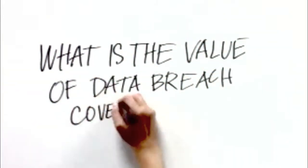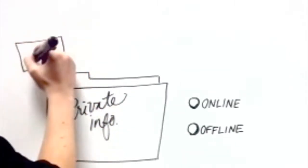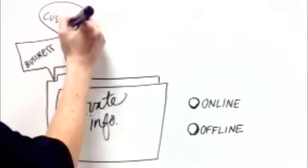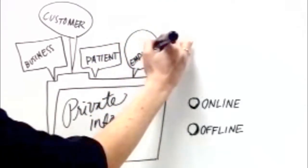What is the value of data breach coverage? A data breach can happen to any business that handles or stores any private business, customer, patient, and or employee information, both on and offline.